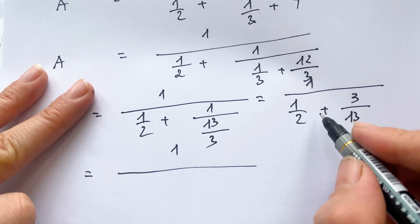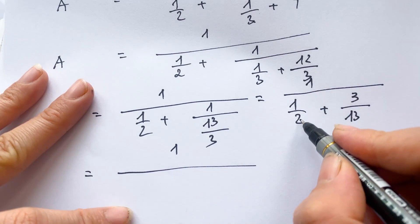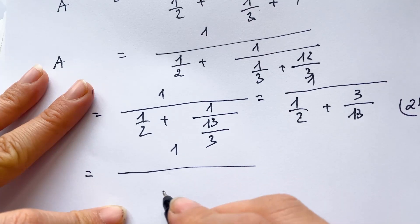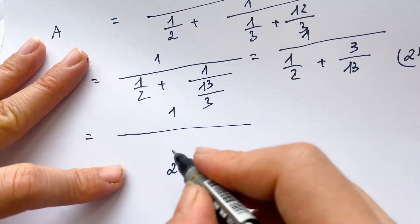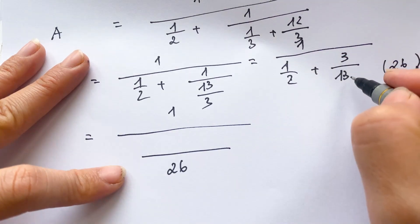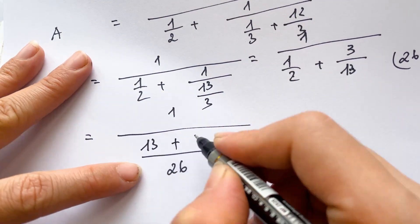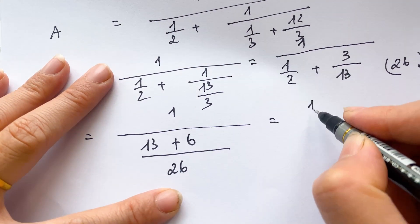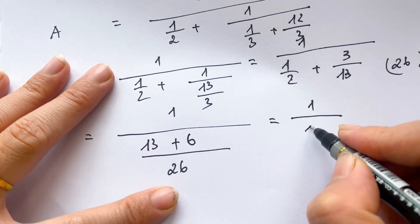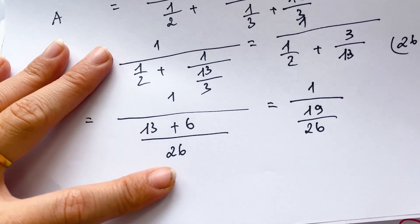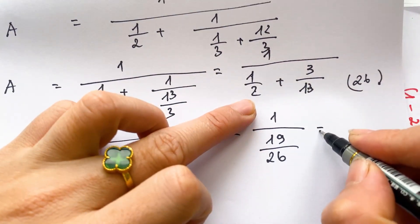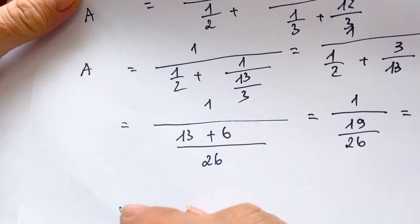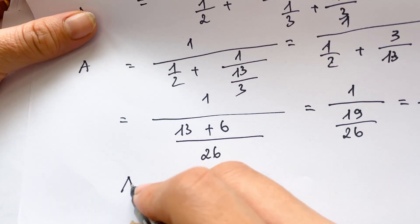For the next step we find the same denominator for two and thirteen, which equals twenty-six. So we have thirteen plus six over twenty-six, giving nineteen over twenty-six. Therefore a equals twenty-six over nineteen.